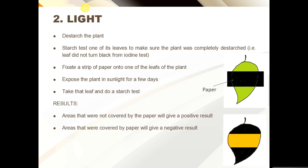The areas of the leaf not covered by the paper — those exposed to sunlight — gave a positive test result. The areas covered by the paper gave a negative result, meaning starch was only made where the leaf was exposed to light. Without light, photosynthesis could not happen and starch was not made. The diagram at the bottom right of the screen shows how this experiment would look.